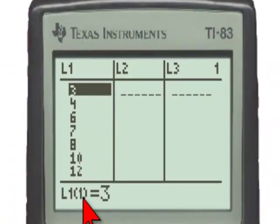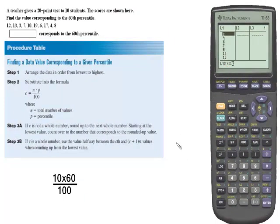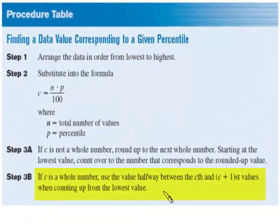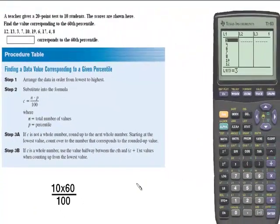However, in our case, C is a whole number, and it instructs us to go to the value halfway between the C value and the C plus 1 value. In our case, we have the value C equal to 6, so the C plus 1 value would be 7.